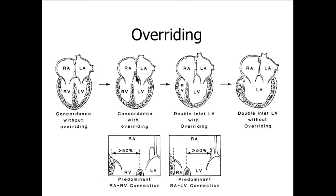When overriding is more than 50% of the tricuspid valve connected to the left ventricle, the predominant connection is RA to left ventricle — we can say double inlet left ventricle. This is the rule of 50%. When both AV valves are completely committed to the dominant left ventricle without overriding, this is double inlet LV without overriding.